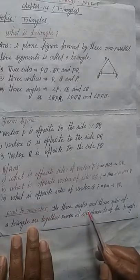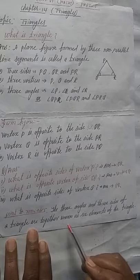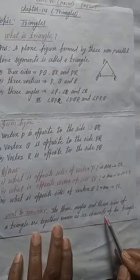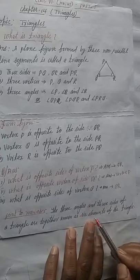Point to remember. The three angles and the three sides of a triangle are together known as the six elements of the triangle. So this is the most important point, students.